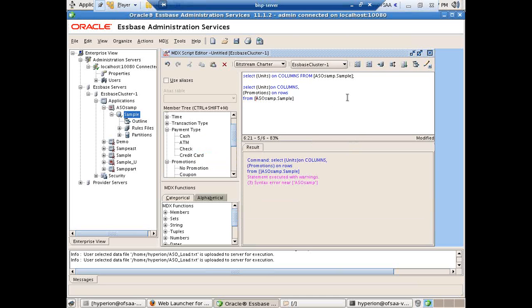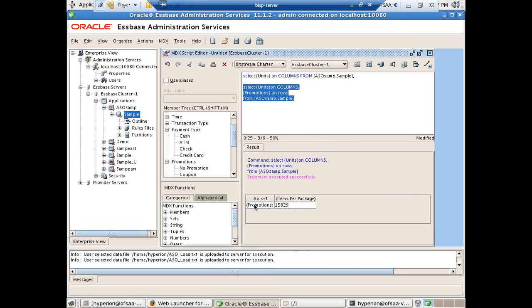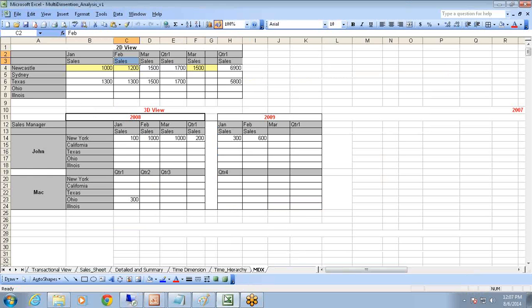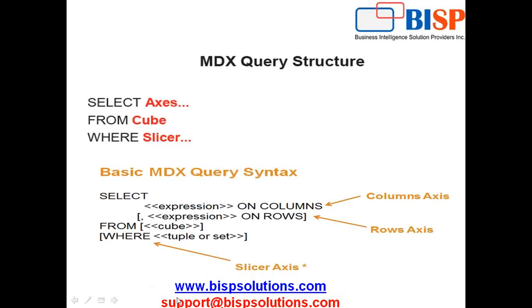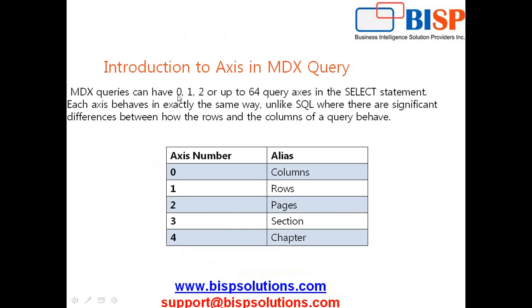After fixing a parenthesis error, I now have a combination of rows and columns. Looking at the output, notice the term 'xs' — xs defines the abstraction of how dimension members appear in a cross-tabular view. Rather than using ROWS and COLUMNS, you can use xs. An MDX query can have 0 to 63 axes, a total of 64 axes — xs 0 refers to columns, xs 1 refers to rows, xs 2 refers to page, and so on.